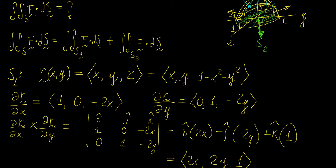The next step is to find the derivatives — we differentiate the parametric surface with respect to x and with respect to y. Starting with the x-derivative we get (1, 0, −2x), and for y we get (0, 1, −2y). Then we take the cross product of those two quantities by computing a 3×3 determinant with the terms arranged in two rows.